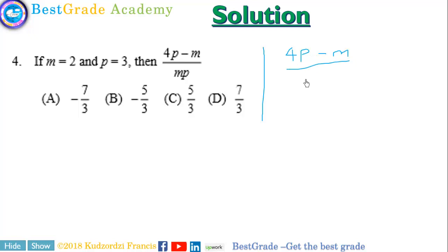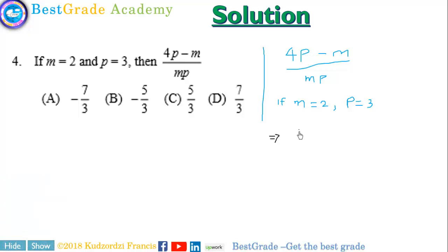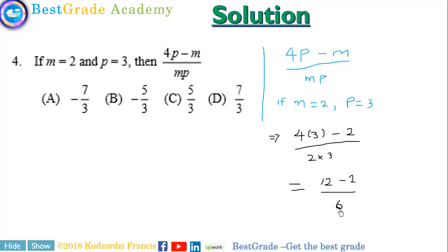We are given the expression (4p minus m) over mp. We want to find this if m is equal to 3 and p is equal to 2. We substitute these values into the expression to obtain: (4 times 3 minus 2) over (2 times 3), which gives us 12 minus 2 over 6. We simplify to obtain 10 over 6, and this further gives us 5 over 3. So this is the correct answer.